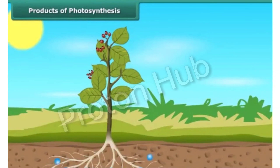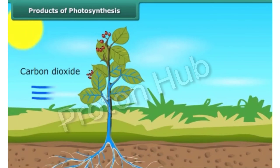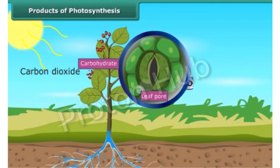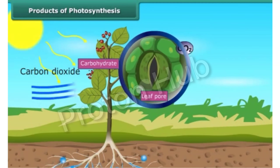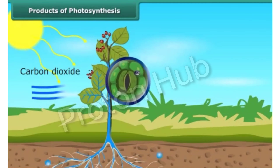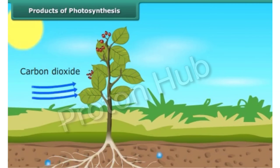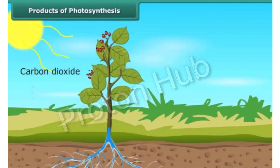After reaching the leaf, carbon dioxide and water react in the presence of sunlight to form carbohydrate. The carbohydrate is ultimately converted into starch, which gets stored in different parts of the plant. Therefore, the first food product formed during photosynthesis is starch.